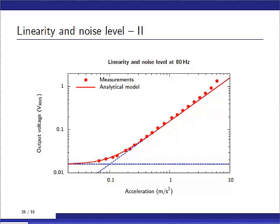And again, points are measurements, the line is the model. And if you take the asymptotes and you look at the intersection, you will find your threshold. And the threshold of our sensor at 80 Hz is 0.1 meter per second squared.